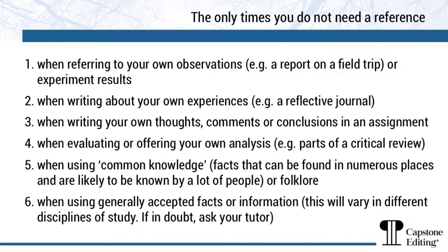Finally, the only times you would not provide a citation are as follows: when you are referring to your own observations, for example a report on a field trip or experiment results; when writing about your own experiences, like in a reflective journal; when writing your own thoughts, comments or conclusions in an assignment; when evaluating or offering your own analysis, for example as part of a critical review; when using common knowledge — facts that can be found in numerous places and are likely to be known by the general public or folklore; and when using generally accepted facts or information, which will vary in different disciplines of study. If in doubt, ask your tutor.